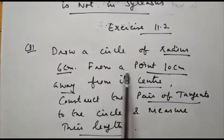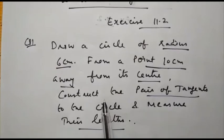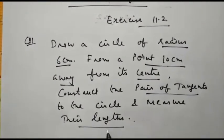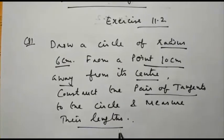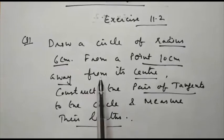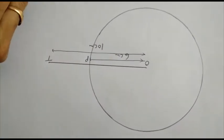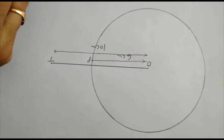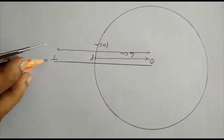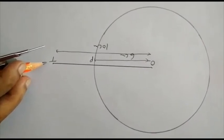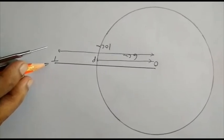Question number 1: draw a circle of radius 6 centimeters from a point 10 centimeters away from its center. Construct the pair of tangents to the circle and measure their length. We will discuss how to draw the tangents by construction. Earlier, we studied about tangents in Chapter 10, and now we will do how to draw it geometrically. First, I have drawn a circle with center O and radius OP as 6 centimeters. T is an external point at a distance of 10 centimeters from the center.